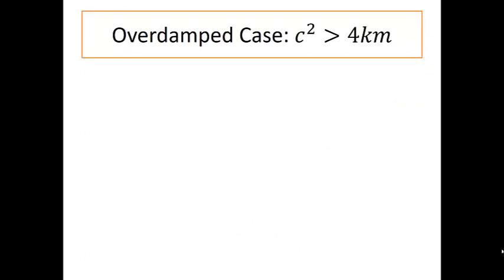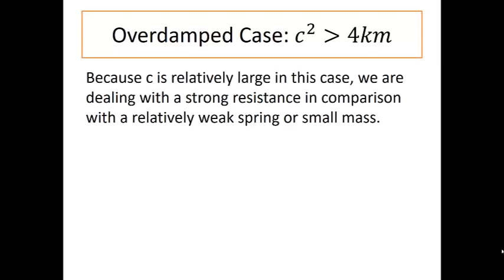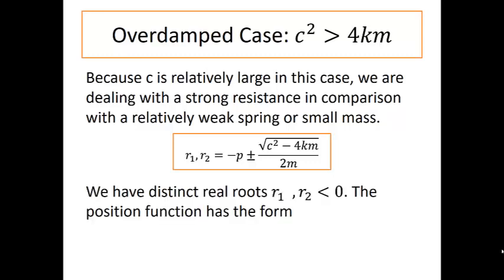The first case is what we call the over damped case, which happens when C squared is bigger than 4KM. Because C is relatively large in this case, we're dealing with a strong resistance in comparison with a relatively weak spring or a small mass. When we go back to these formulas for our roots, notice that if C squared is greater than 4KM, that tells us we're going to have two distinct real roots R1 and R2. Our position function X of T is going to look like some constant C1 times E to the R1 T plus C2 E to the R2T.